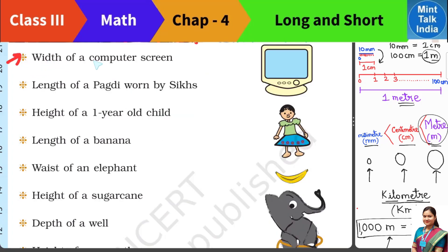First is the width of a computer screen. The width is the side portion, and the length is the other portion. If we have to measure the width of the screen, we can use our 30 cm long scale — so we can measure the width of the screen in cm.